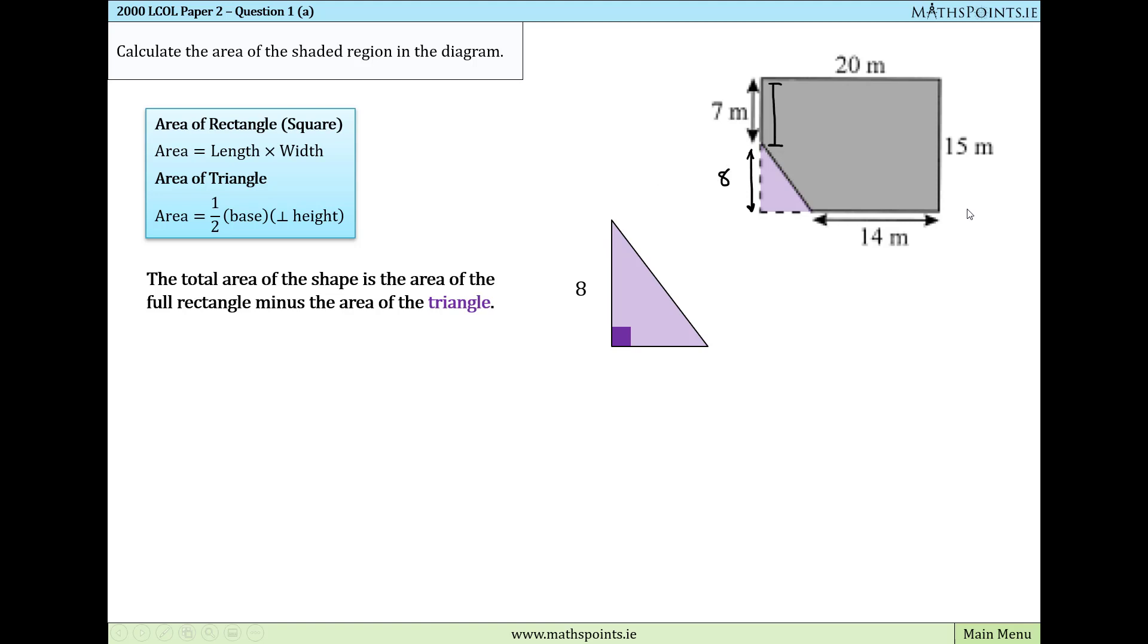For the base, we can see that the base is going to be the full length of the rectangle, which is 20 minus this section here, which is 14, and 20 minus 14 gives us 6.